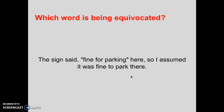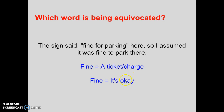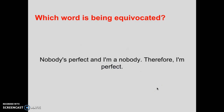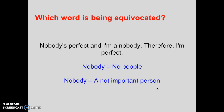Find the word being equivocated in these examples. 'The sign said a fine for parking here, so I assumed it was fine to park here' — the word is 'fine': one version means a ticket or charge, the other means it's okay. 'Nobody's perfect, and I'm a nobody, therefore I'm perfect' — the word is 'nobody': nobody as in no people, versus a not-important person.